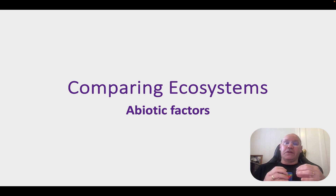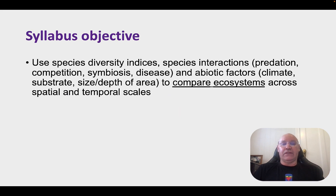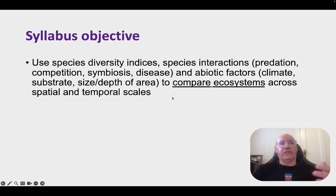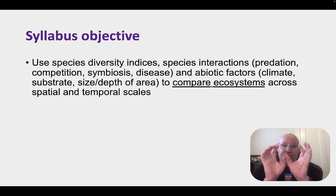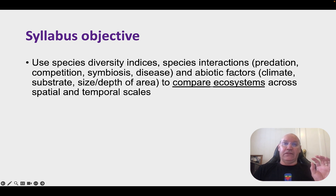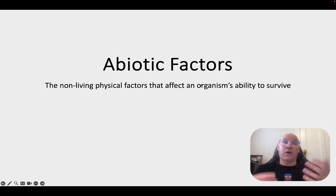This syllabus objective focuses on comparing ecosystems in a number of different ways. We need to be able to use species diversity indices and species interactions — in other words biotic factors — but also abiotic factors to compare ecosystems across spatial and temporal scales. Spatial scales involve different distances or how an ecosystem varies with increased distance, while temporal scales involve comparing the same ecosystem at different times.